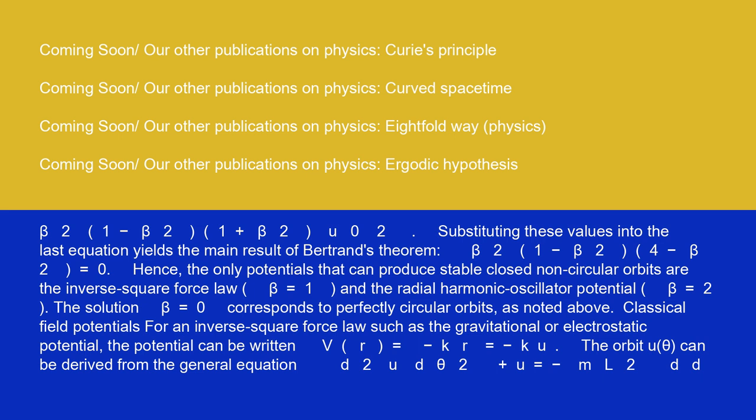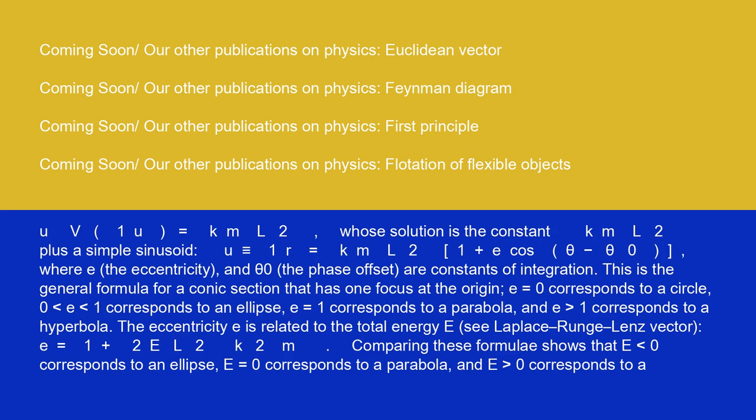Classical field potentials: for an inverse square force law, such as the gravitational or electrostatic potential, the potential can be written V(r) equals minus k/r equals minus ku. The orbit u(θ) can be derived from the general equation d²u/dθ² plus u equals minus (m/L²)(d/du)V(1/u) equals k/(mL²), whose solution is the constant k/(mL²) plus a simple sinusoid. u is identical to 1/r equals k/(mL²)(1 plus e cos(θ minus θ₀)), where e, the eccentricity, and θ₀, the phase offset, are constants of integration.